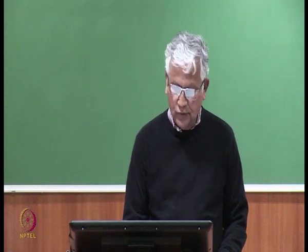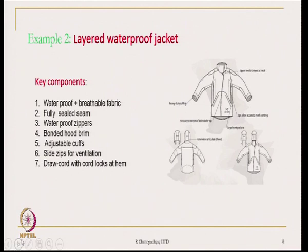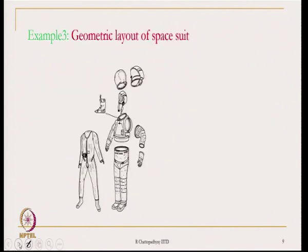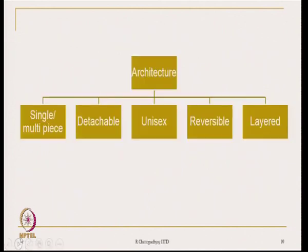For the waterproof jacket, this is the kind of design someone can conceive. The idea is that you can convey your thoughts to others — to other team members. This is another geometric layout of a space suit. That is the step. Now comes the question: what are the different types of architectures practiced in the design of textile products?